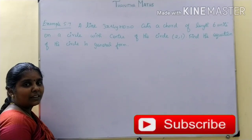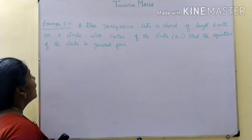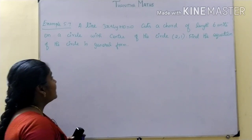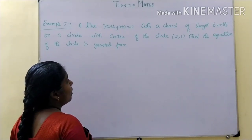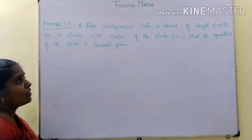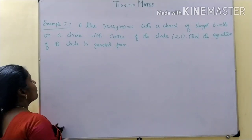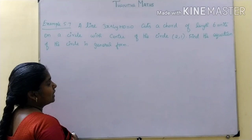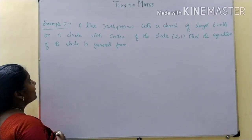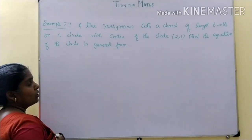Students, now you are going to learn example 5.7. A line 3x plus 4y plus 10 equal to 0 cuts a chord of length 6 units on a circle with center 2,1. Find the equation of the circle in general form.